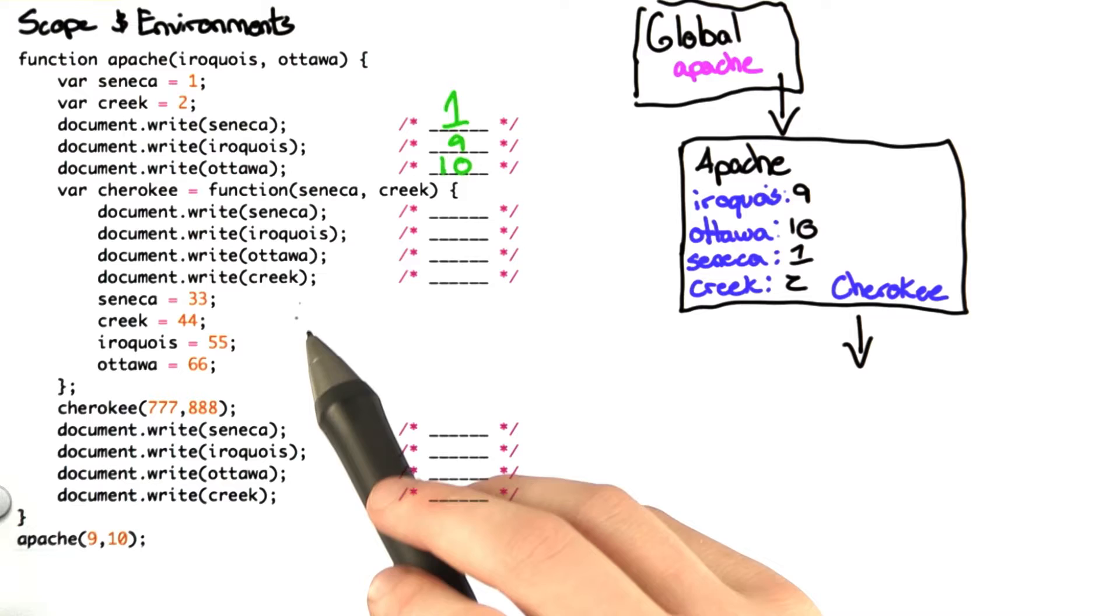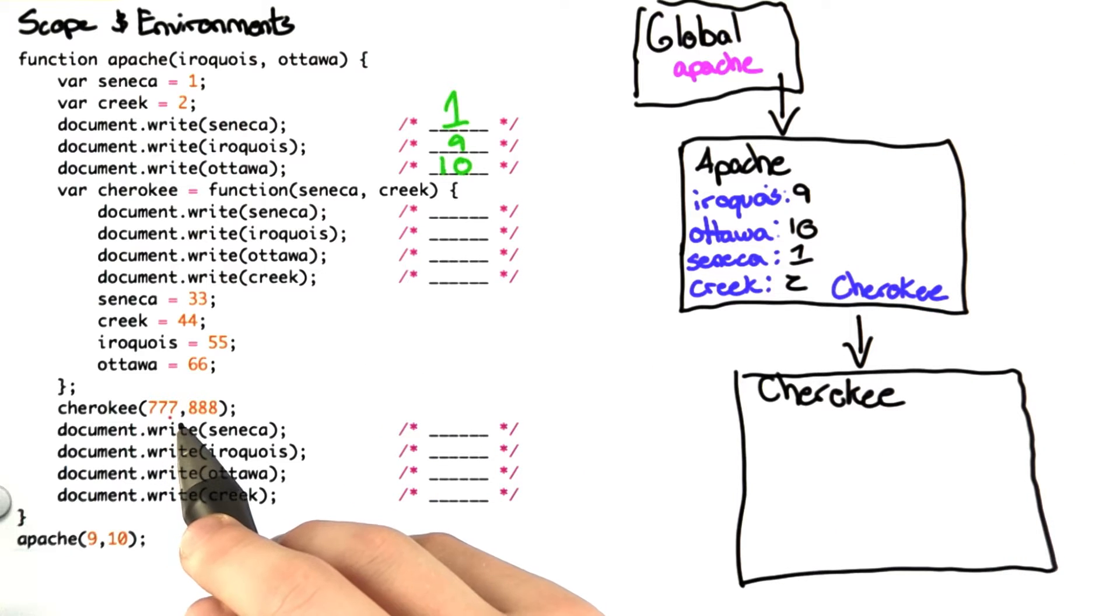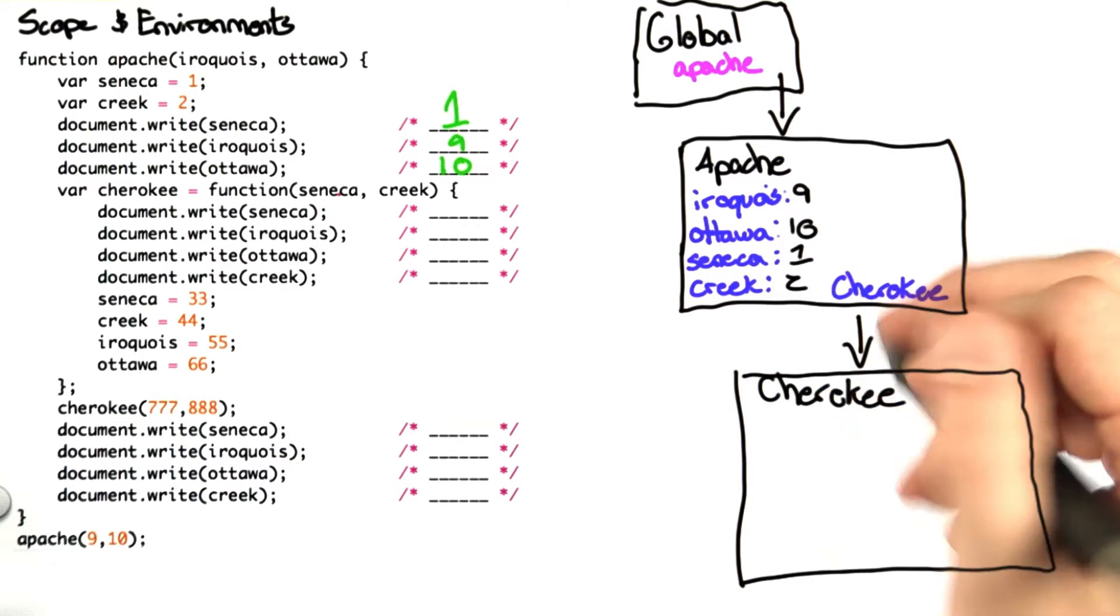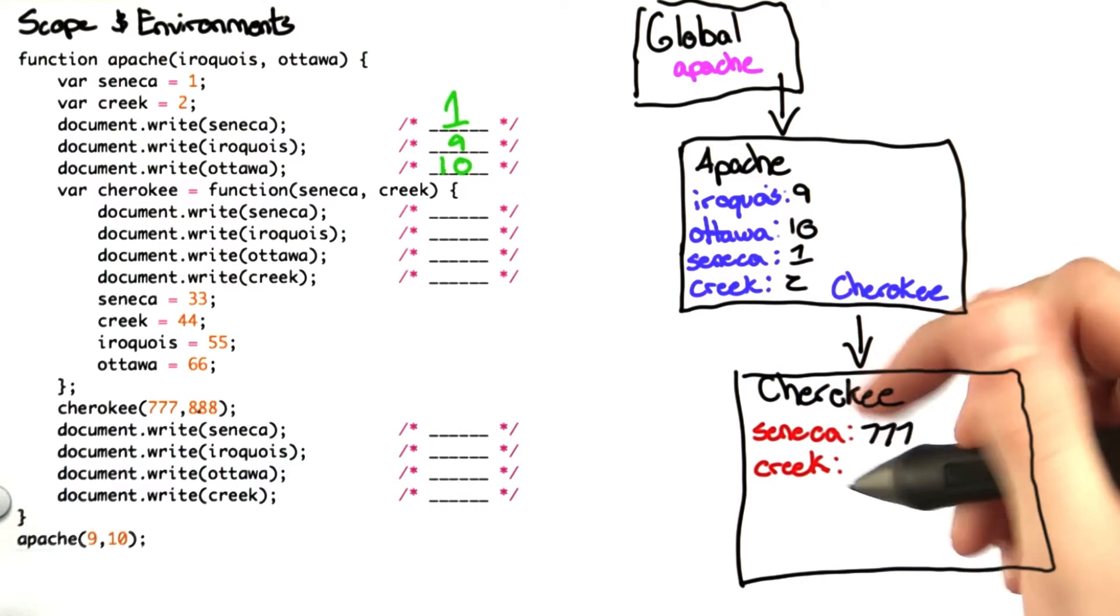Since we're going into a new function, we create a new environment. 777 gets assigned to Seneca, which is a local variable, and Creek gets a value of 888.